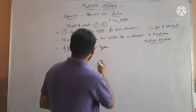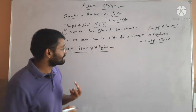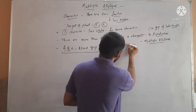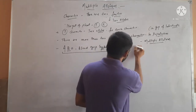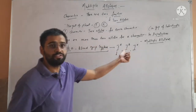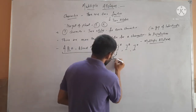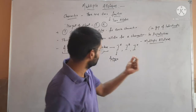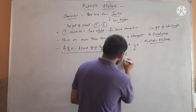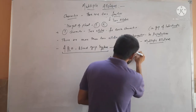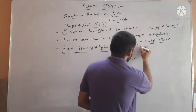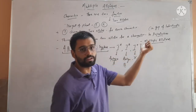In the ABO blood group system, this is a character, and for this character there are three alleles: IA, IB, and I0. This is a gene, and this gene is forming a product — that is an antigen — which is present on the RBC. IA is forming antigen A, IB is forming antigen B, and I0 is forming no product at all, so no antigen will be on the RBC carrying this allele.